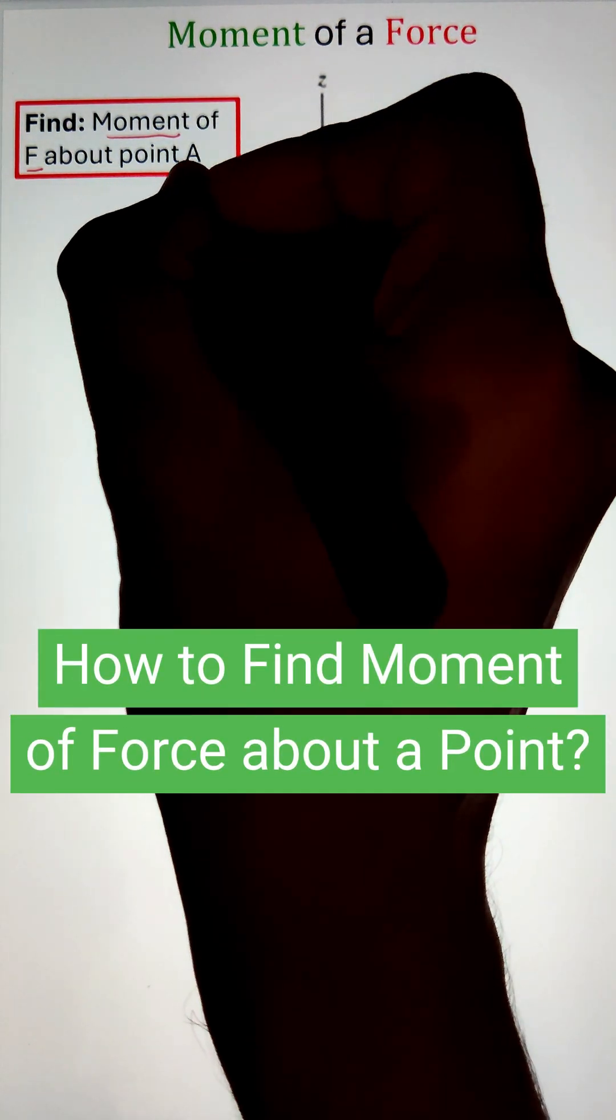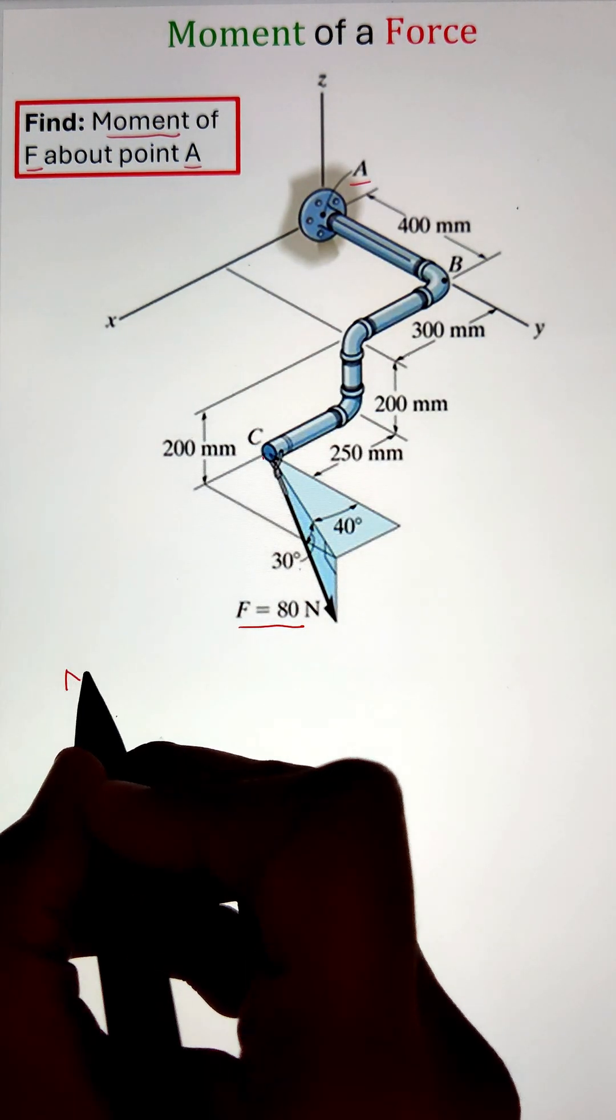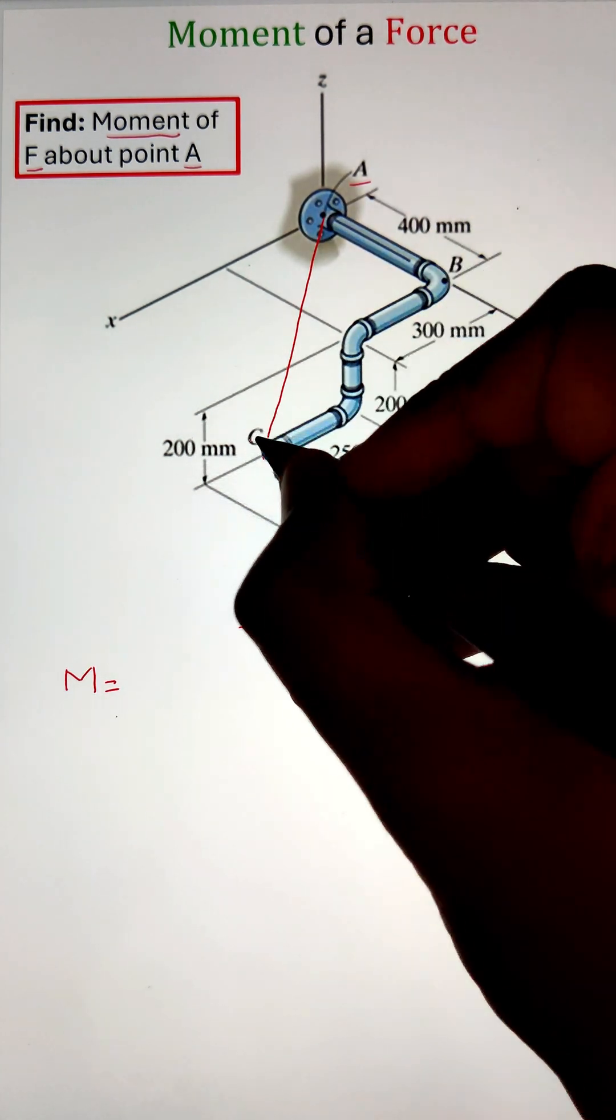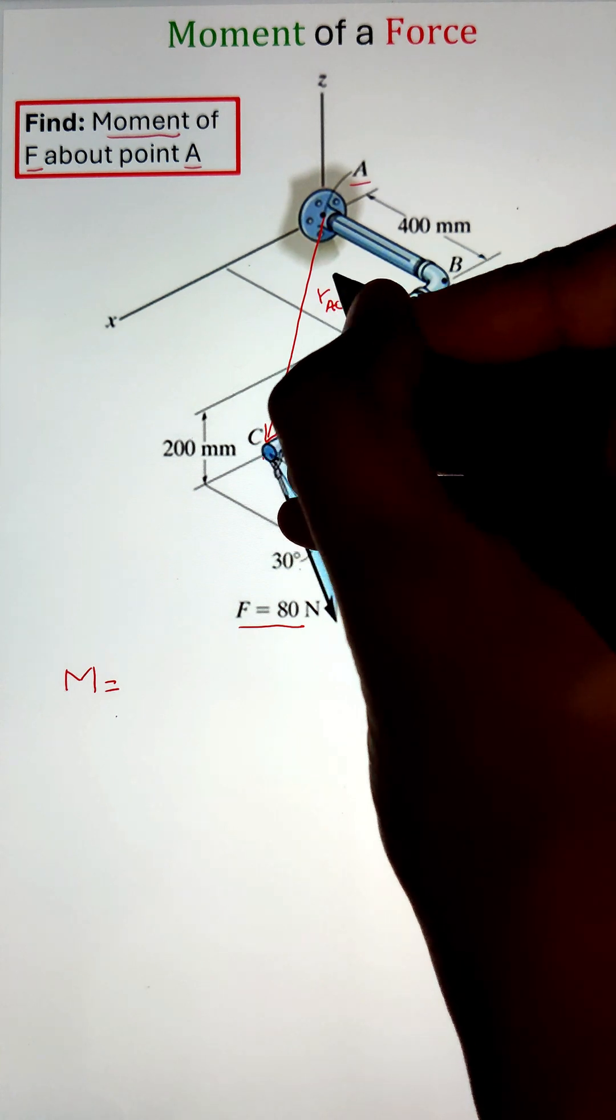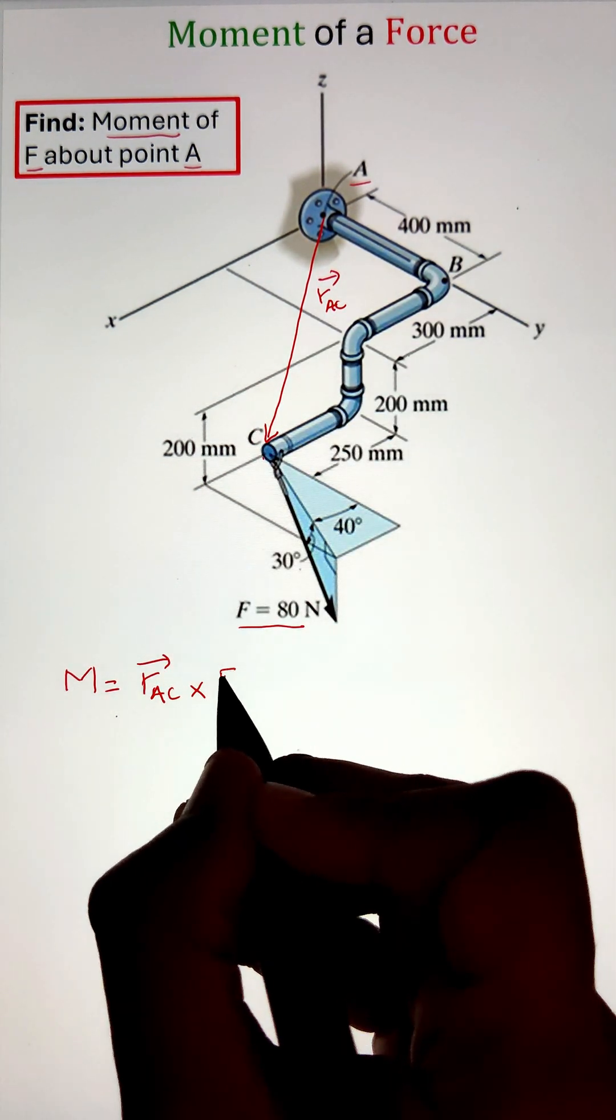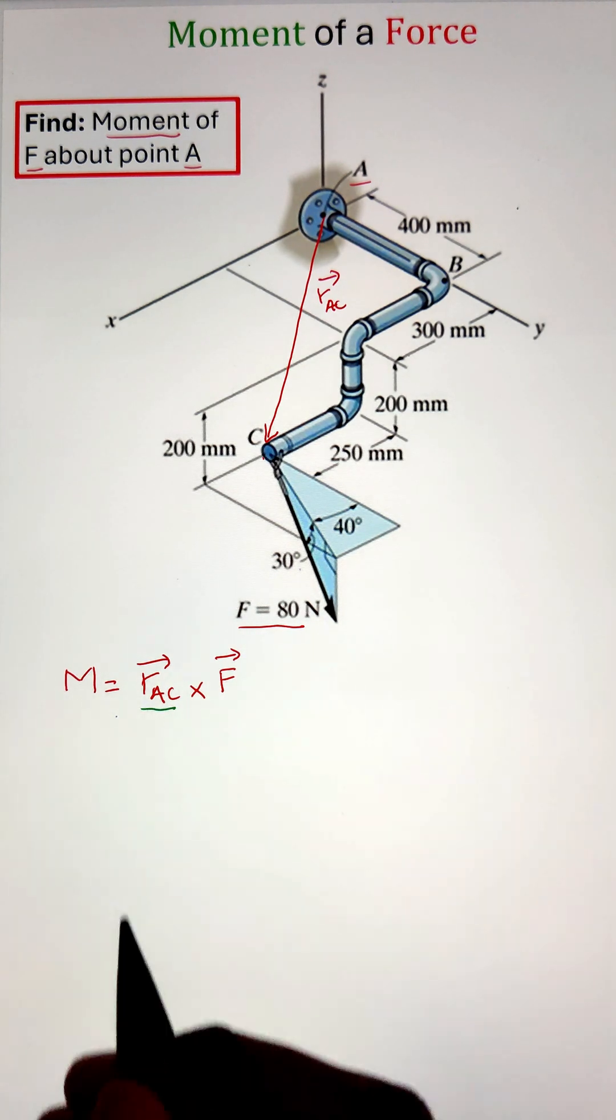Moment of a force about a point can be calculated by taking the cross product of the position vector and the force vector. The position vector will initiate at the point at which we want to calculate the moment and its head will be at the location where the force is applied.